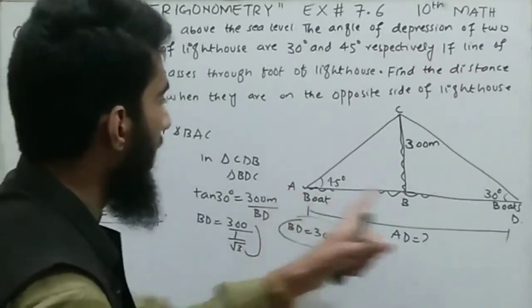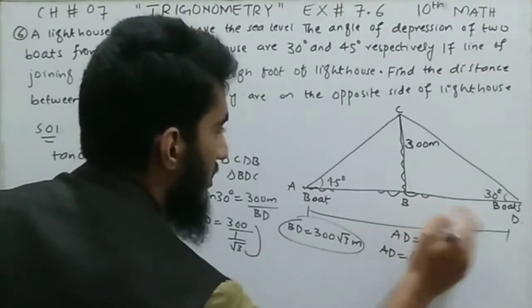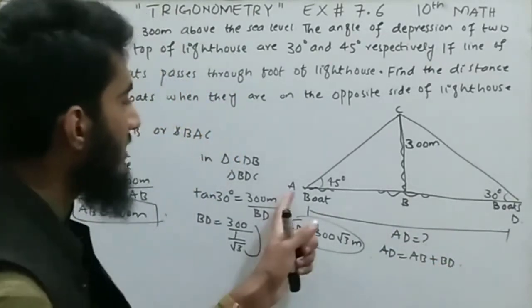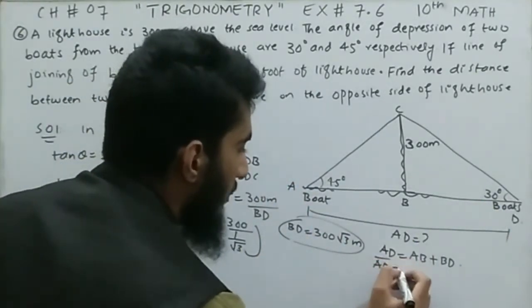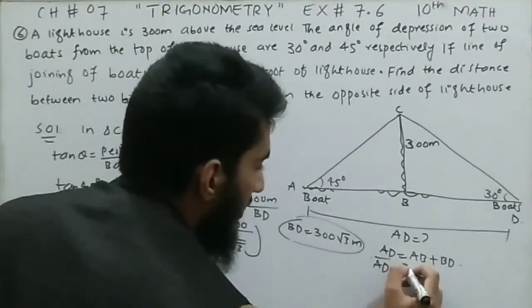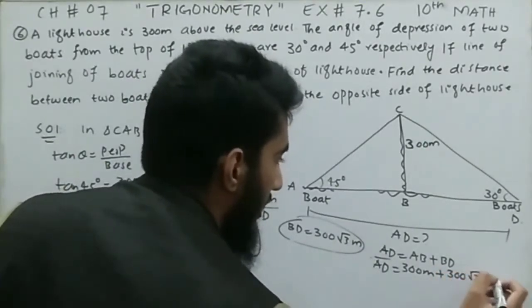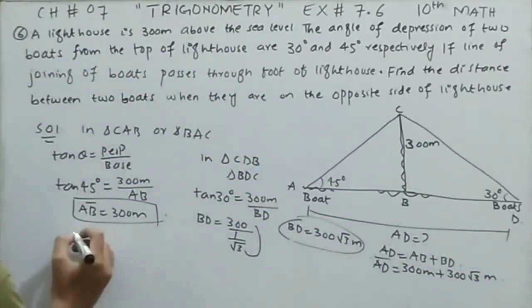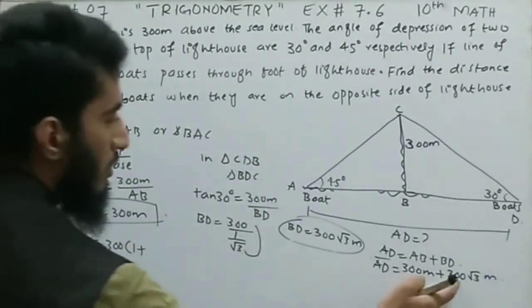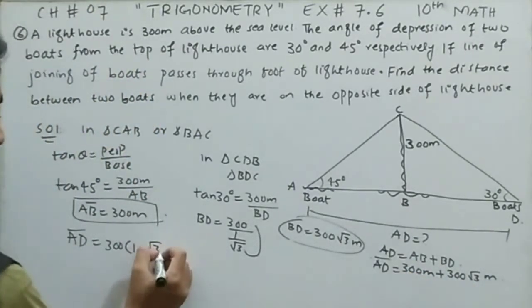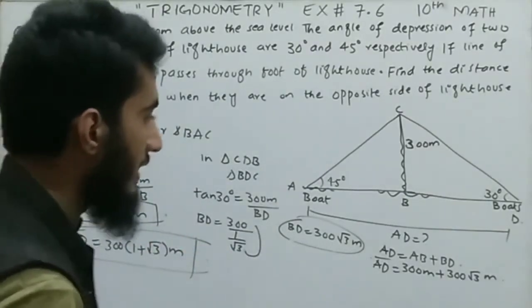AD equals AB plus BD. AB is 300 meters and BD is 300√3 meters. So AD equals 300 + 300√3. Taking 300 as common: AD equals 300(1 + √3) meters. This is the required distance between the two boats.